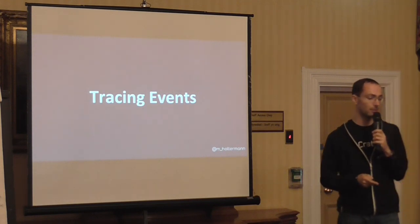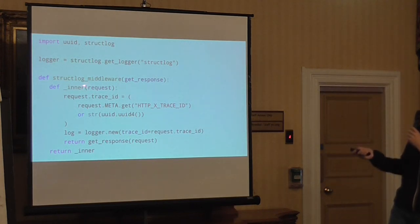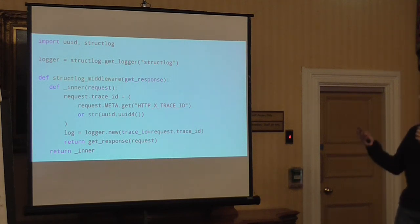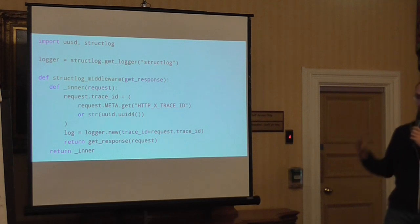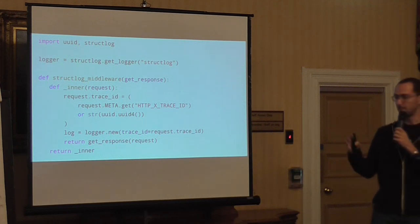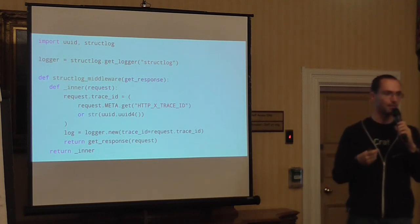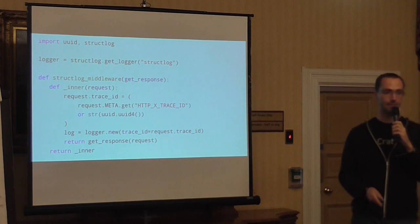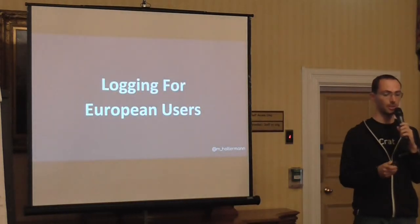You can implement this in Django, for example, using a middleware. When the request comes in, you look if there's a trace ID already present. If it's not present, you create one. If it is present, you reuse it. You can do something similar for the user object and attach this information to the structured logging.